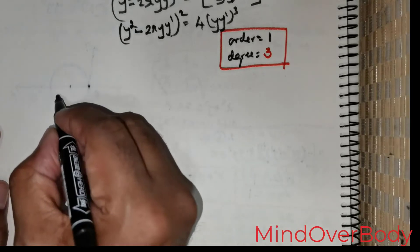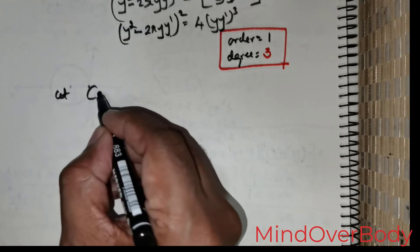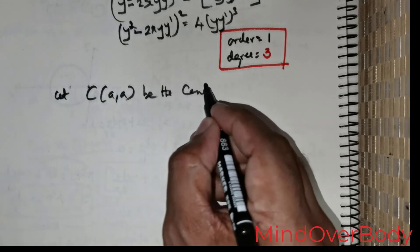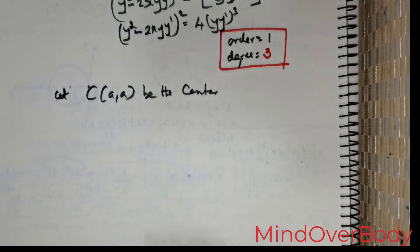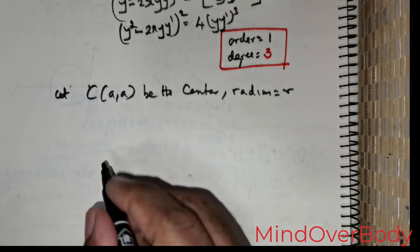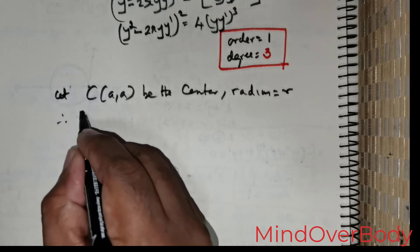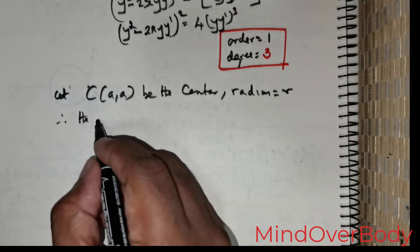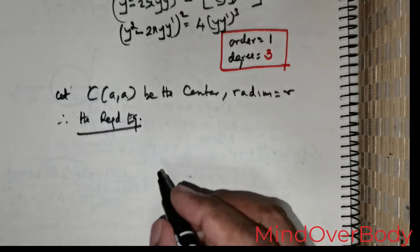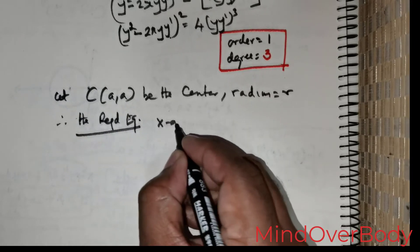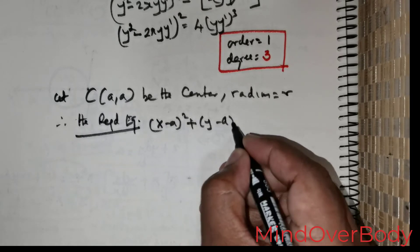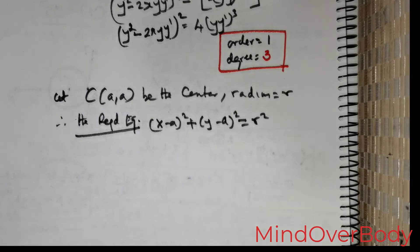Since the centers lie on y = x, let c(a, a) be the center of the circle and r be the radius. The equation of the family of circles is (x − a)² + (y − a)² = r².